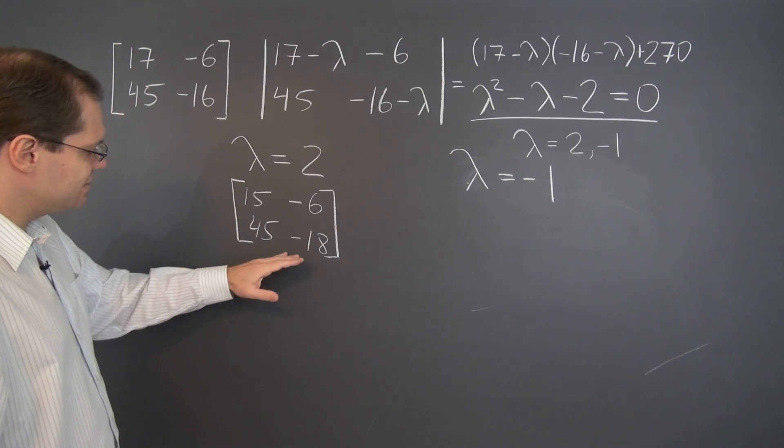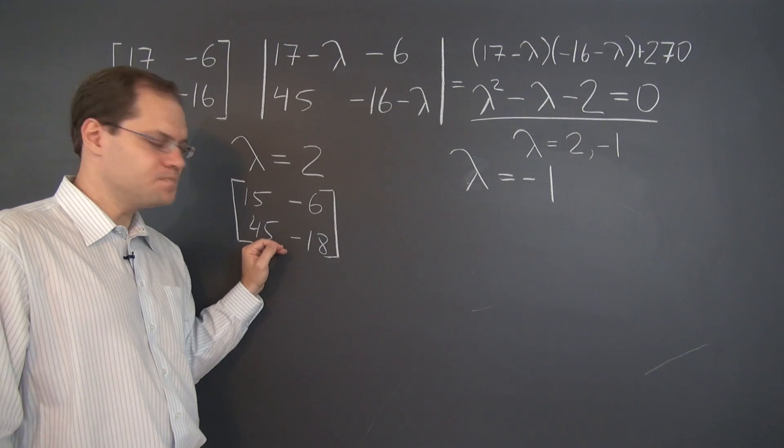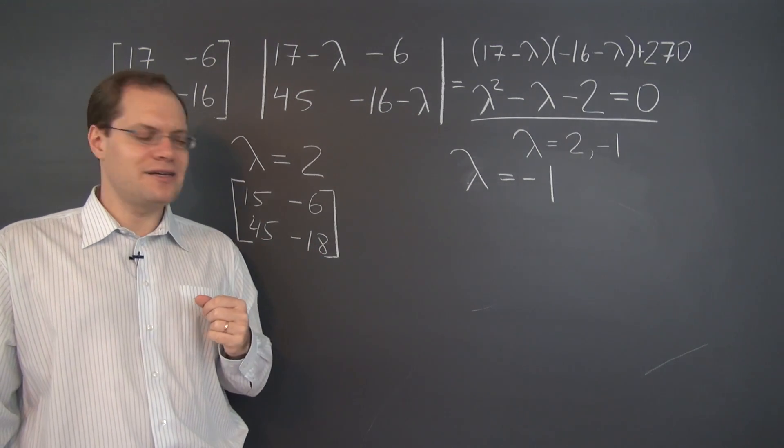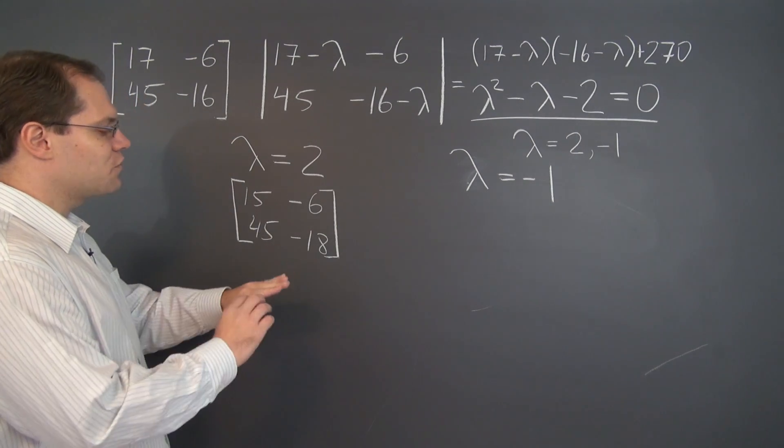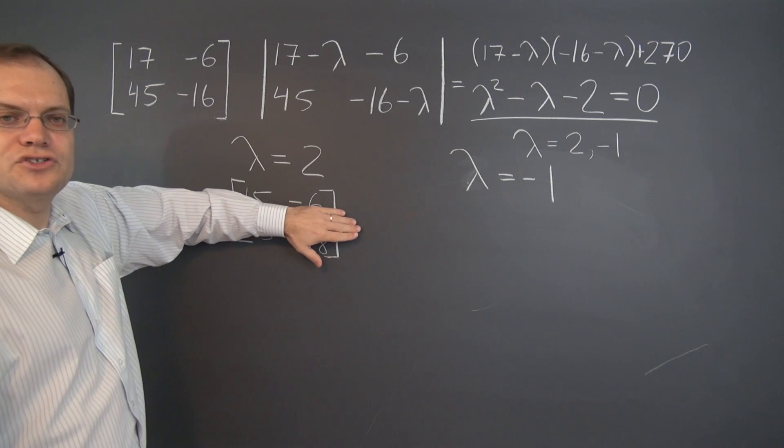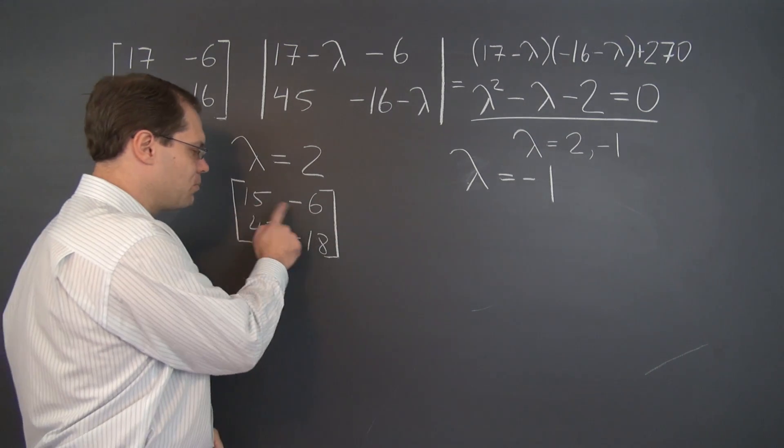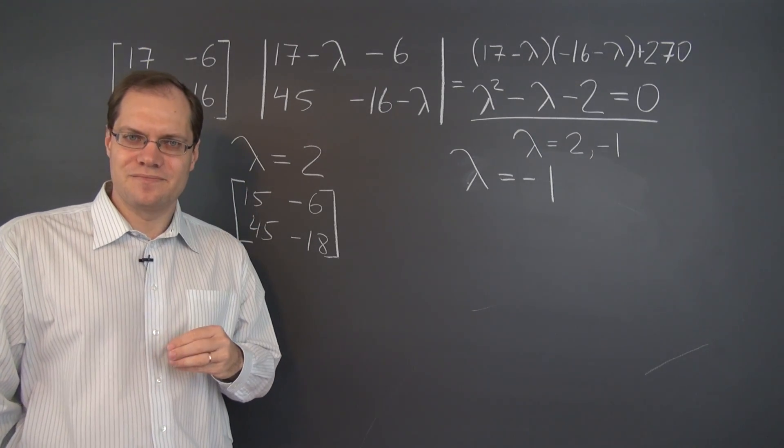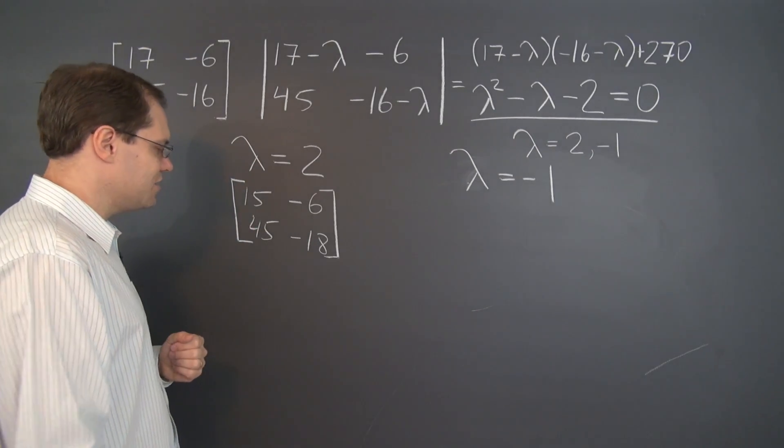And if we found the eigenvalue correctly, this matrix should be singular with linearly dependent columns. Let's see if it is. Well, it is. And you should be able to see it. Now we just have to find the proper linear combination. And for that, you only have to look at the first two entries. Because whatever proportion the first two entries are in, the other entries are in the same proportion. That's because this matrix is singular.